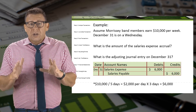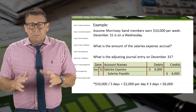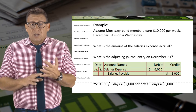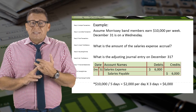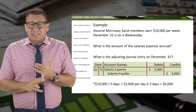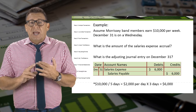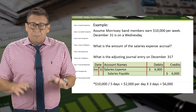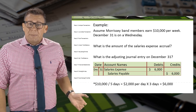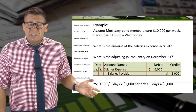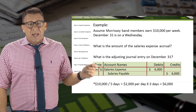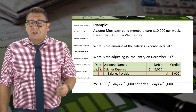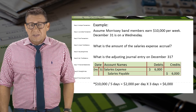When we record an adjusting entry to accrue expense, we always debit an expense account and credit a liability. In this example, we debit salaries expense and credit salaries payable for $6,000.